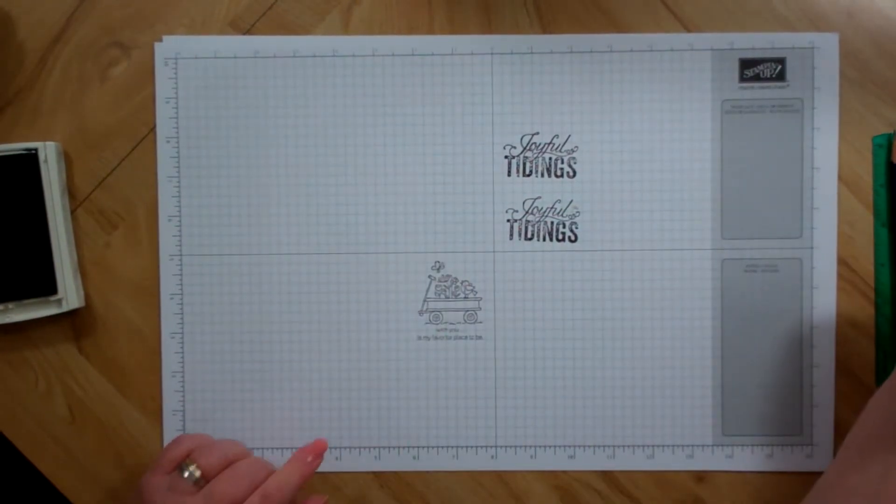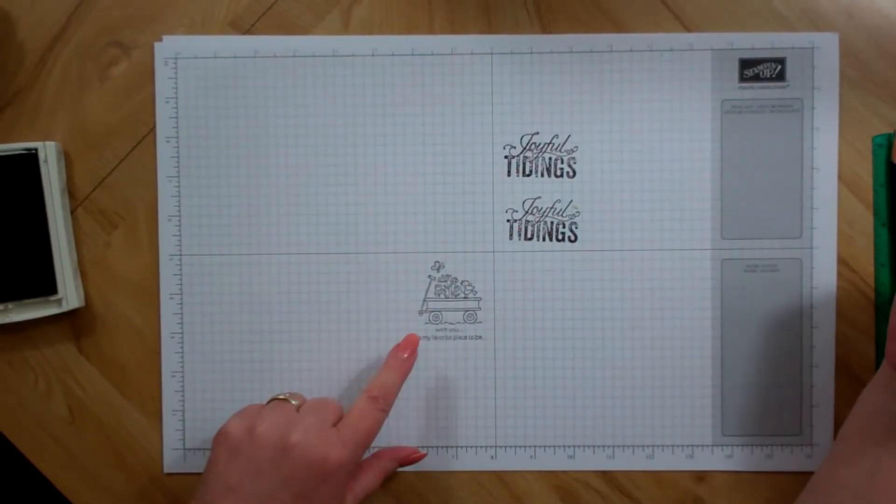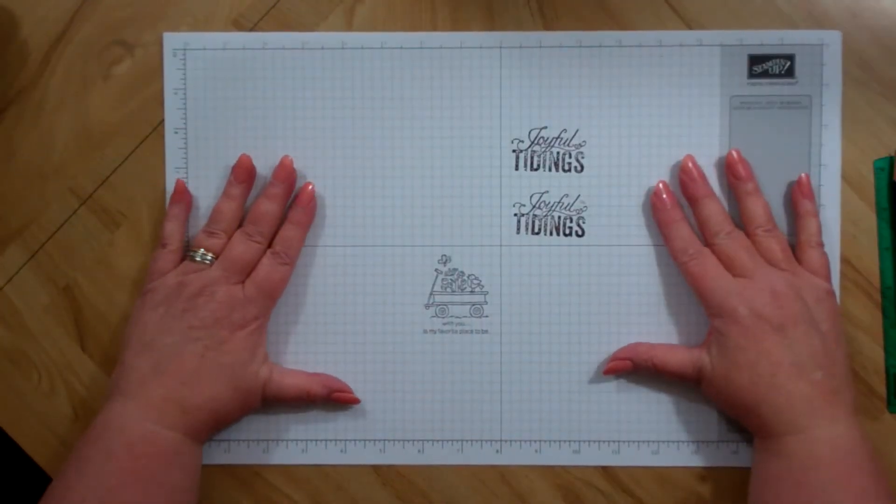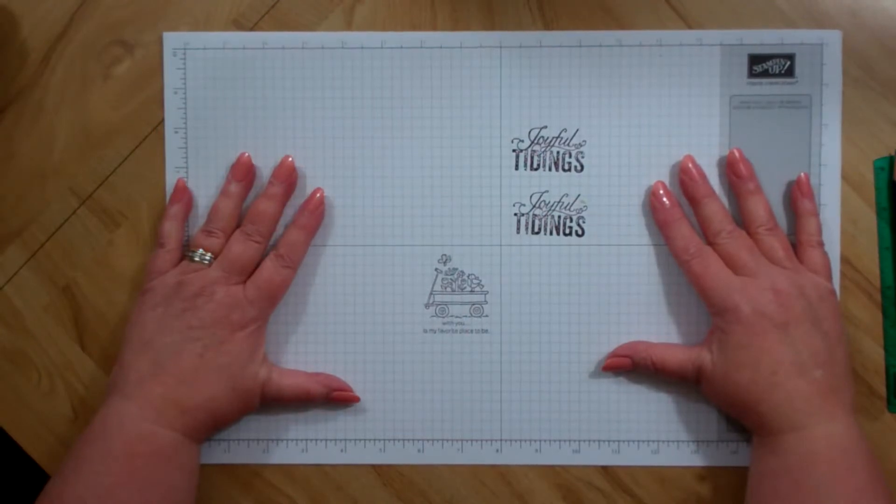There you go. Can't get better than that. So, there you see, you've got almost perfectly straight images and lines and words. All you have to do is make sure you line up the edge of your stamp with the edge of your card stock or your project.